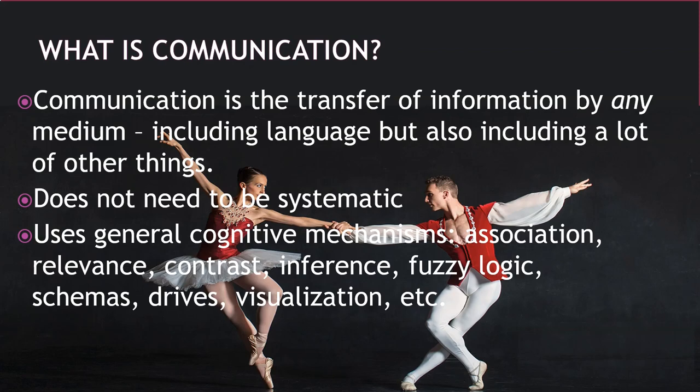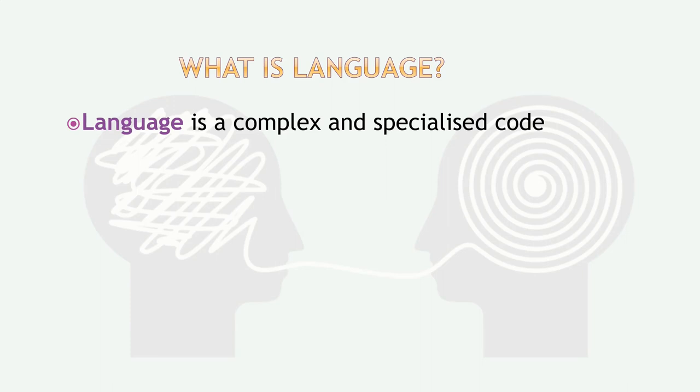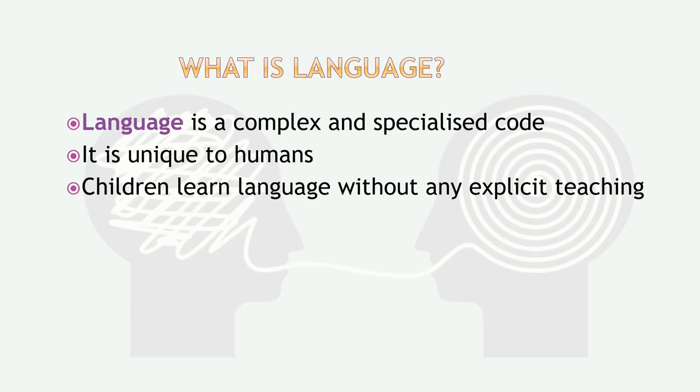So enough about communication. What then is language? Language is a complex and specialized code. It is unique to human beings. Children seem to learn the language without any explicit teaching and this contrasts quite sharply with other kinds of knowledge like mathematics or physics.